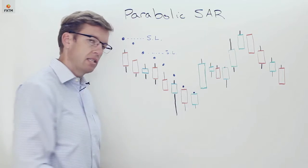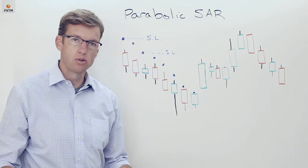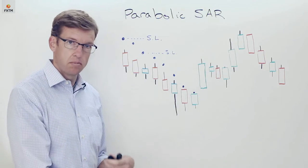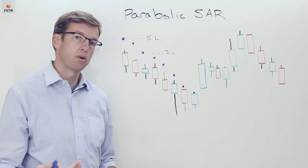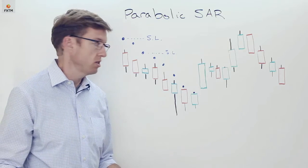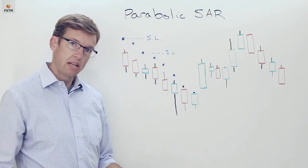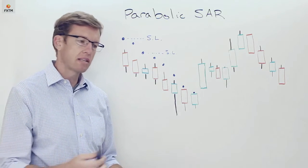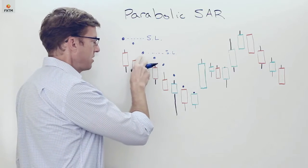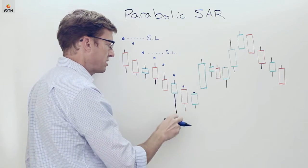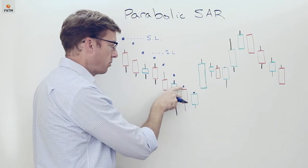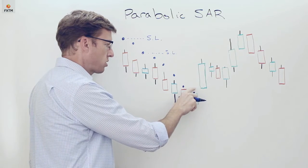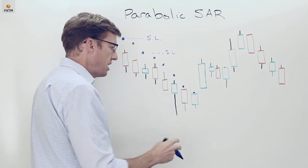Now what causes it to change? The parabolic SAR will eventually flip underneath the price chart when it goes into a bullish trend—hence the term reverse. So it will flip underneath those candles or bars as a high price has been exceeded. The dots will accelerate or get closer and closer to the high price each day.